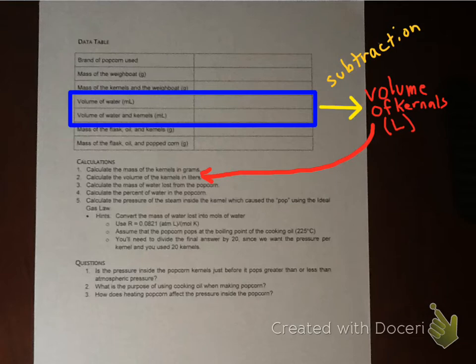And so you would use that subtraction to calculate the volume of the kernels in liters. Keep in mind that what they're actually asking for is the volume in liters. So if, for instance, you get a value of, let's say, 3.9 milliliters, you need to be able to convert that to liters. So you need to convert that to liters to get that data for number two. So again, calculation number two utilizes the fourth and fifth boxes of the data table to get the volume of the kernels. Again, in liters.